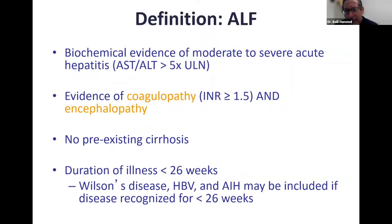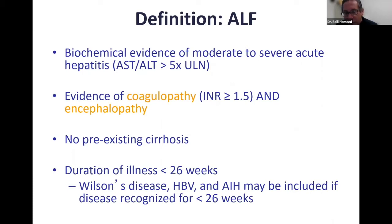Most of these patients have biochemical evidence of moderate to severe acute hepatitis, with ALT and AST greater than five times the upper limit of normal — typically over 1000. There is also evidence of coagulopathy with INR greater than 1.5, along with encephalopathy, in patients with no pre-existing cirrhosis. The duration of illness is ideally less than 26 weeks.